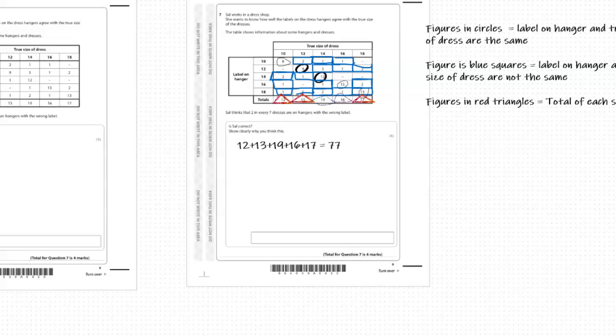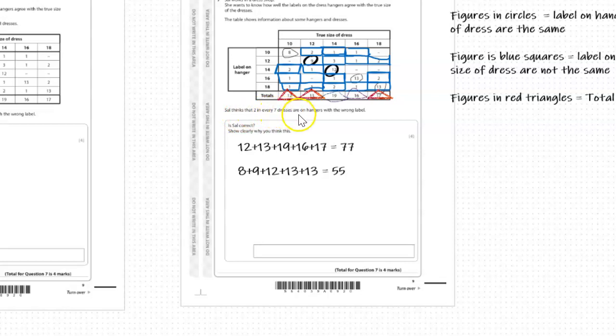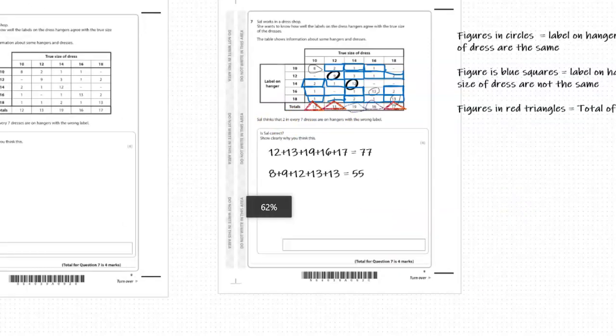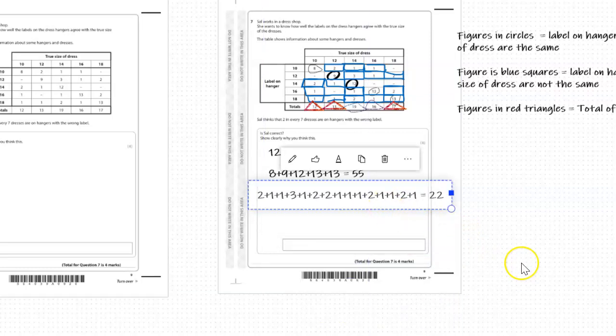To make the comparison we could either add up all those that are right, which comes to 55 out of 77, but what we're comparing is the hangers with the wrong label. So probably more useful to count up all those that are in the blue squares that are wrong, and that's 22 out of 77.